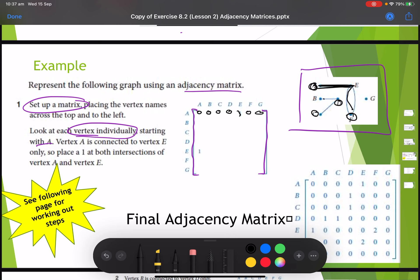You'll do the same thing. B to a, nothing there. B to b, no there's no loop. B to c, nope nothing there. B to d, oh yes there is one connection there. B to e, nope no connections there. B to f, no no connections there. B to g, no connections there. And you would literally just keep going. So do all of a's first, all of b's first, all of c's first.